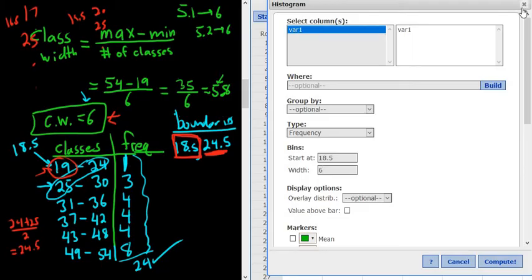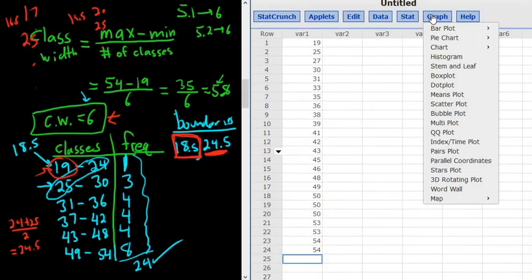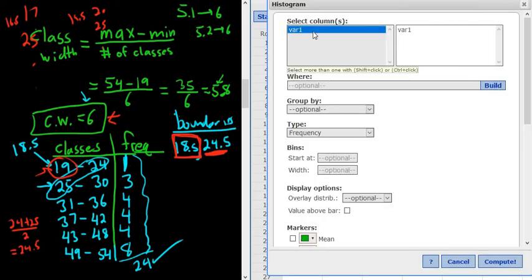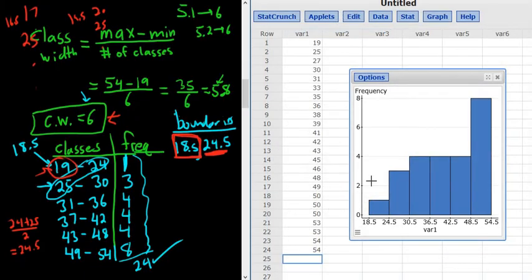The width is the class width. Let me do this again in case you blinked. So you go to Graph, then you go to Histogram, then you click on var 1, then you start at the first boundary, so 18.5. And the width is 6. Then you just click Compute, and we should have our histogram. Boom, there it is. Beautiful. What a beautiful histogram.